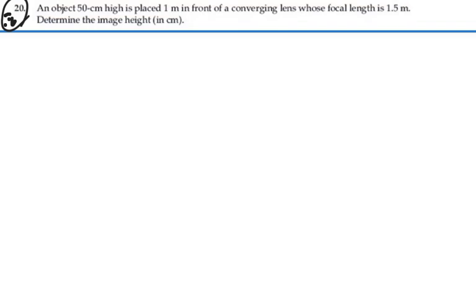Determine the image height in centimeters. So we have an object height of 50 centimeters, an object distance of 1 meter, which would be 100 centimeters, and we have a focal length of 1.5 meters, which would be 150 centimeters. We need to find, for one thing,